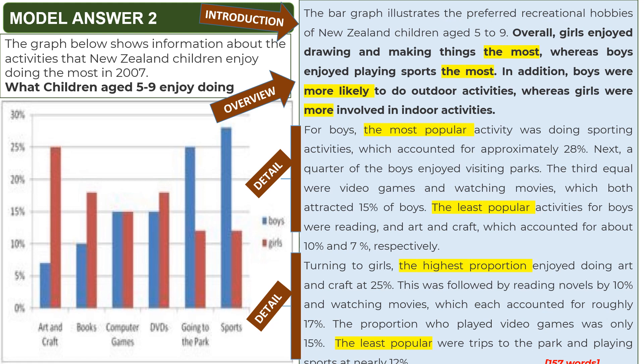Change 'activities' to 'free time activities.' The synonym is 'recreational,' and activities can also be called hobbies. So write 'preferred recreational hobbies of New Zealand children.' What is the age of the children? Five to nine. This becomes your introduction.